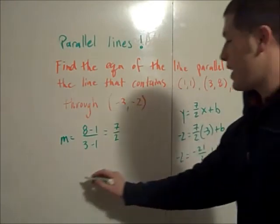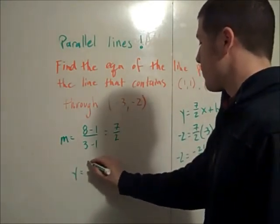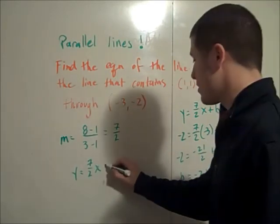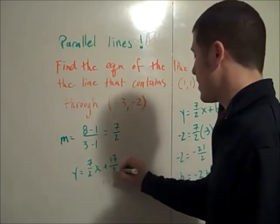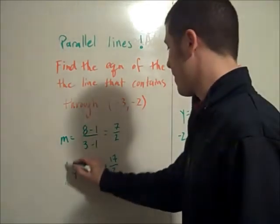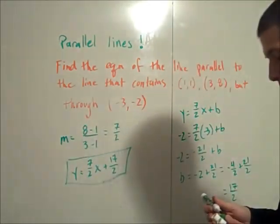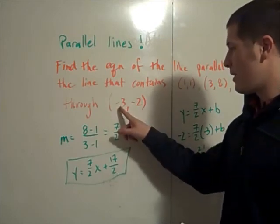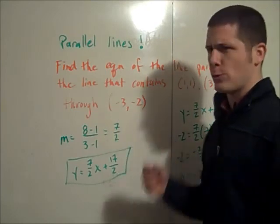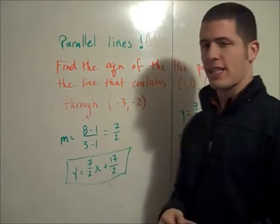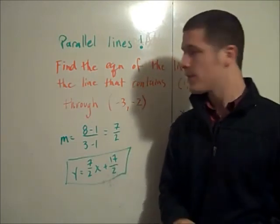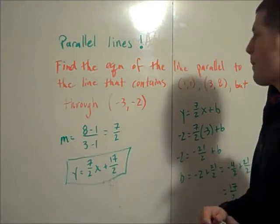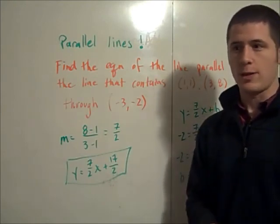So the equation of my line is y equals 7/2x plus 17/2. Again if you know point-slope form you would just set this equal to m and this is your x1 and this is your y1. So it would be y plus 2 equals 7/2 times x plus 3. So here's how you find equations of lines parallel to a given line. I hope it helps.